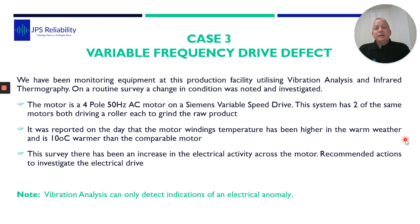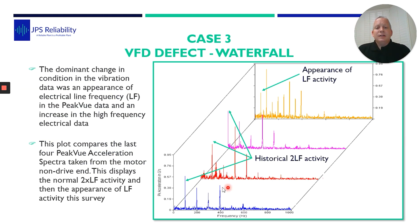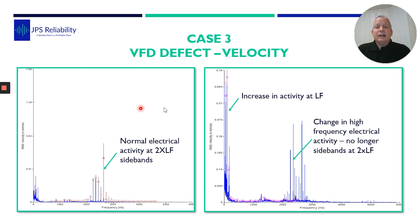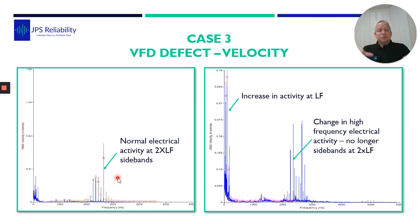This is the vibration data, and down the bottom here is the historical data where you can see the two times line frequency. On this particular survey, we suddenly had an appearance of a one times line frequency — 25 hertz — which is really abnormal. This is the peak view data. Comparing the velocity, the normal velocity levels actually came down, but what you'd normally see is the two times line frequency, whether that's from an eccentric difference in the air gap or it's been torqued down, or just natural motion. On this survey, we had a large increase of 25 hertz, and the electrical mount was now actually side-banded by 25 hertz. So the vibration had increased, but there was a change in the pattern and the condition.